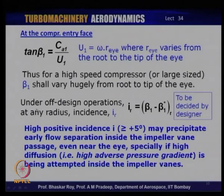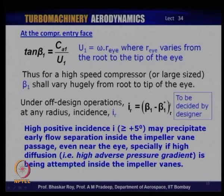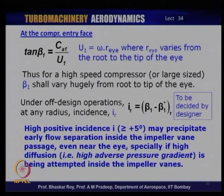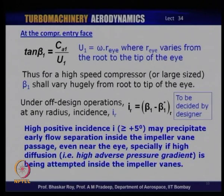This twisted vane requires an incidence to be provided by design, as seen in axial compressors. This design incidence should not be very high — at the point of design it should be as close to zero as possible, so that β₁ (the flow angle) and β₁* (the blade or vane angle) have a difference — the incidence — as close to zero as possible. During off-design operation, incidence will definitely depart from zero — it could be positive or negative — and when it goes positive or negative it could precipitate a separation right at the inlet of the impeller, impairing efficiency and increasing losses.